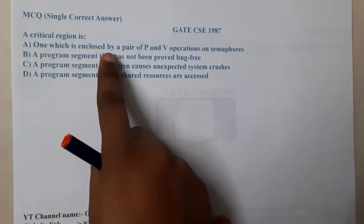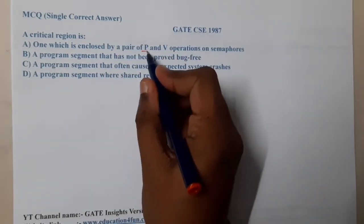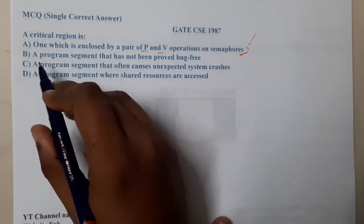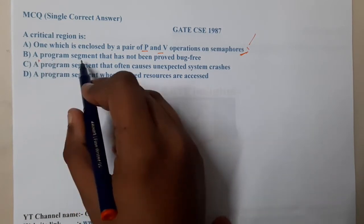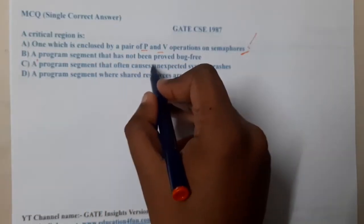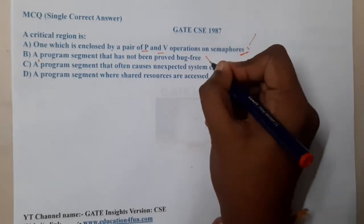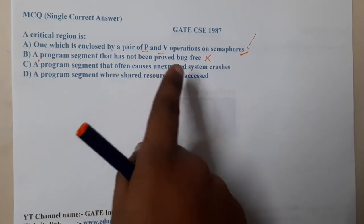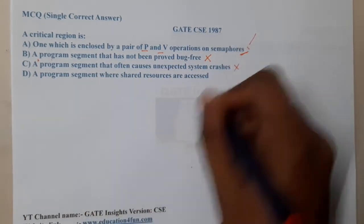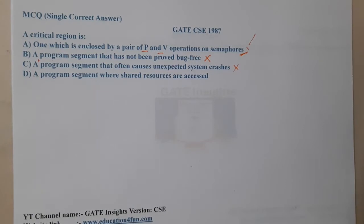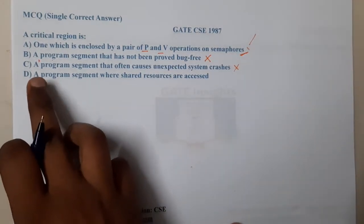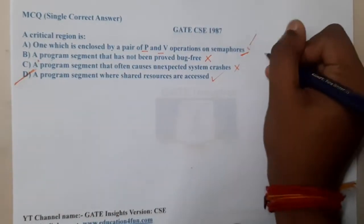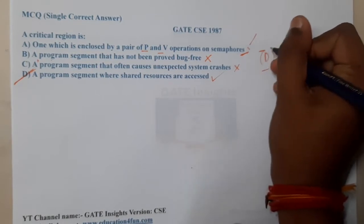Option A says that it is one which is enclosed in a pair of P and V operations on a semaphore — that makes some sense. Option B says a program segment that has not been proved bug free — that's absolutely wrong. Option C says a program segment that often causes unexpected crashes — also absolutely wrong. Option D says a segment where shared resources are accessed — most probably D should be the most appropriate answer.